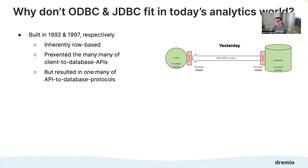It was really: database, you do the heavy crunching, return me a small result set, and I'll display that. So it was beneficial and certainly provided a lot of abilities. But one of the keys is that it really prevented this many-to-many client-to-database API problem — every client has their own API and every database has their own API. Because it only standardized the client side, what you ended up with was this one-to-many world where you have this ODBC and JDBC API to the actual database protocols themselves. It could be better.